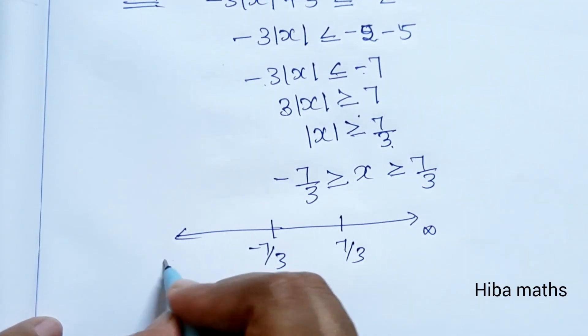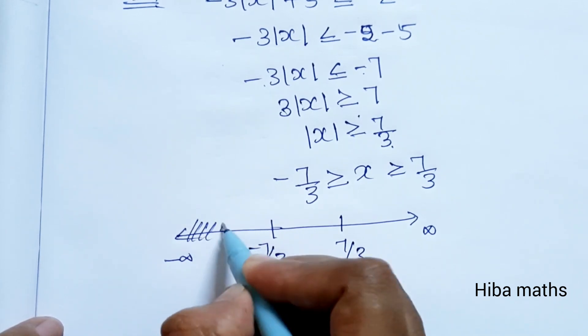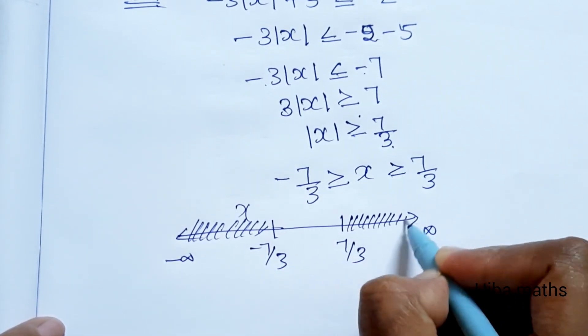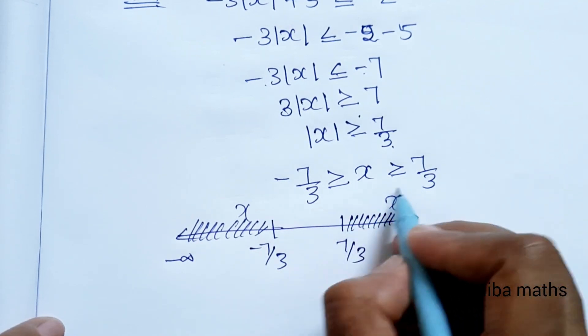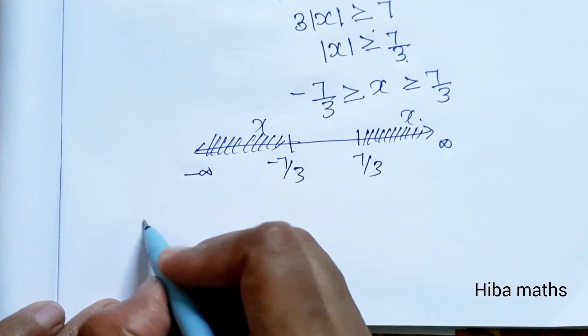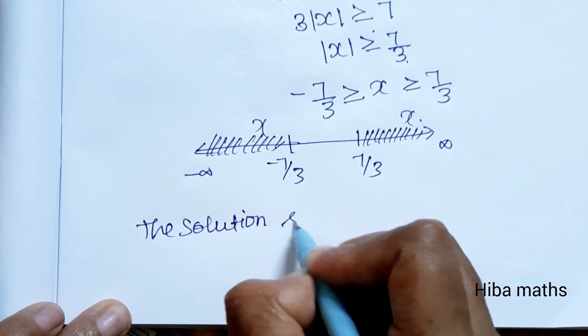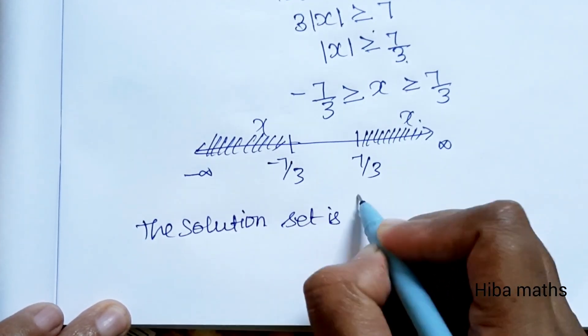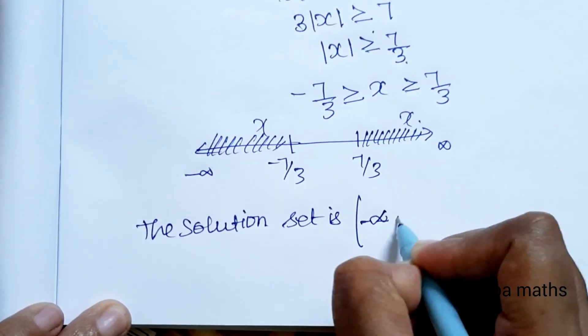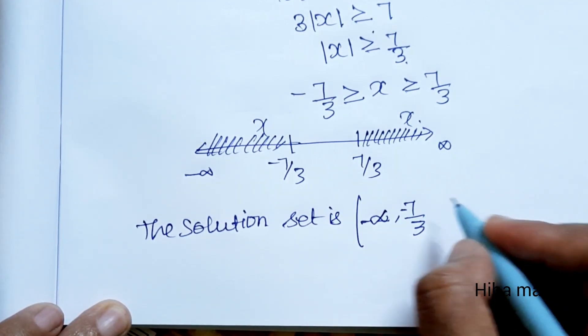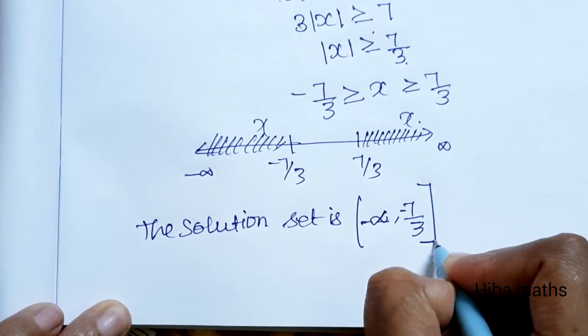So |x| ≥ 7/3 means x ranges from minus infinity to -7/3, and from 7/3 to plus infinity. When we write the solution set, it becomes: the solution set is (-∞, -7/3] ∪ [7/3, ∞).